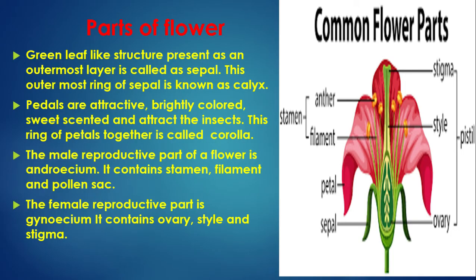Parts of a flower: The green leaf-like structures present as the outermost layer are called sepals; this outermost ring of sepals is known as the calyx. Petals are attractive, brightly coloured and sweet-scented, attracting insects; this ring of petals together is called the corolla. The male reproductive part is the androecium, which contains stamen, filament and pollen sac. The female reproductive part is the gynoecium, which contains ovary, style and stigma. Together, anther and filament form the stamen; ovary, style and stigma form the pistil.